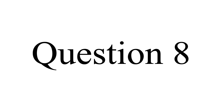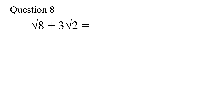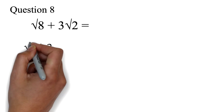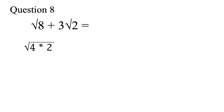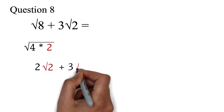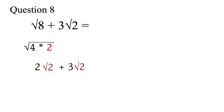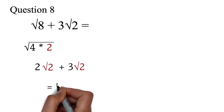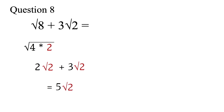Question 8: add √8 + 3√2. By just looking at it, you might think you cannot add them, because one is √8 and the other is √2. But √8 can be simplified. 8 can be written as the perfect square 4 times 2. We find the square root of 4 to get 2, then keep the 2 under the root sign, giving us 2√2. So now we have 2√2 + 3√2. Since they both have √2, we add 2 + 3 to get 5, then bring the √2 after it. Therefore, our final answer is 5√2.